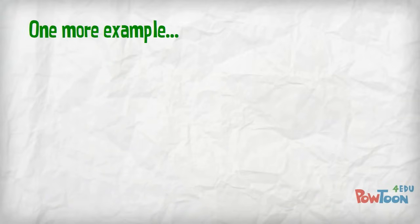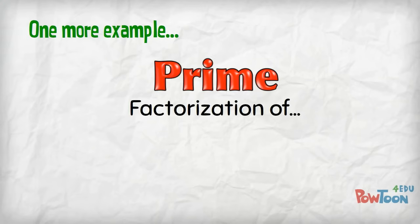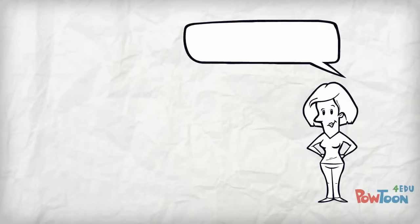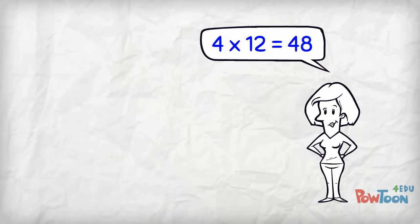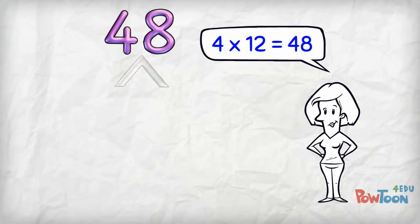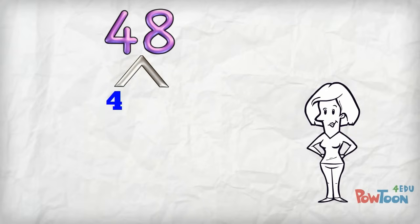One more example and then it's your turn. We will do the prime factorisation of 48. I know that 4 times 12 is 48. This time, I have 2 composite numbers to work on. The 4 and the 12.